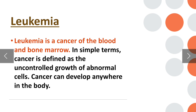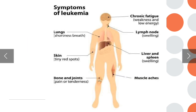Leukemia is a cancer of the blood and bone marrow. In simple terms, cancer is defined as the uncontrolled growth of abnormal cells, and cancer can develop anywhere in the body. Symptoms include chronic fatigue, weakness and low energy, swollen lymph nodes, liver and spleen swelling, muscle aches, and bone and joint pain.